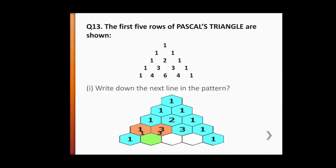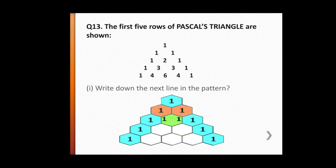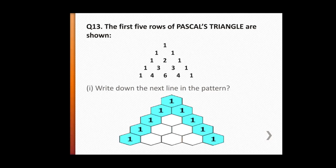So for each new line, you add the left and right adjacent numbers from the previous line to get each term. For example, 1+2=3 and 2+1=3 for the fourth line. Then 1+3=4, 3+3=6, 3+1=4 for the fifth line. The leftmost and rightmost numbers are always 1.